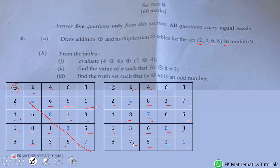Now let's do the B part, Bi. We have to evaluate 4⊗6⊕2⊗4. So how do we do that? You come to the multiplication table. 4⊗6, so 4, 6 is 6, you put it there. Then 2⊗4, 2, 4 is 8, you put it there.